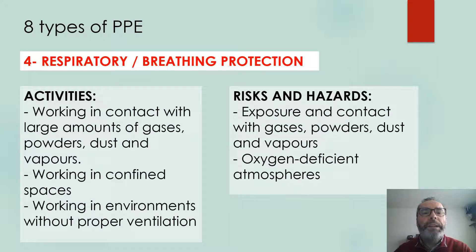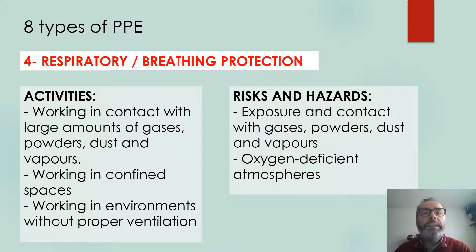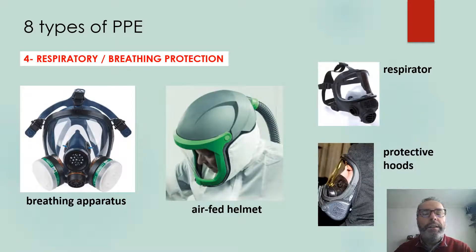The fourth type of PPE is respiratory or breathing protection. Activities include working in contact with a very large amount of gases, powders, dust, and vapors. Working in confined spaces without ventilation also requires this type of PPE. The risks it helps to prevent are exposure and contact with gases, powders, dust, and also working in oxygen-deficient atmospheres. Examples include breathing apparatus, air-fed helmets — some helmets can be equipped with air-feeding implements — respirators, or protective hoods.